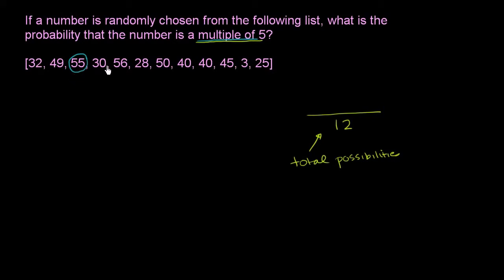55 is a multiple of 5. 30 is a multiple of 5, that's 6 times 5. That's 55 is 11 times 5. Not 56. Not 28. This is clearly 5 times 10.